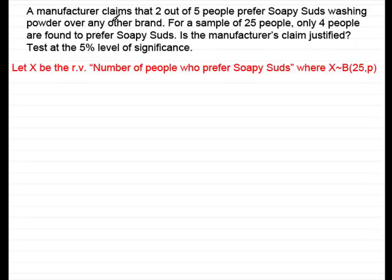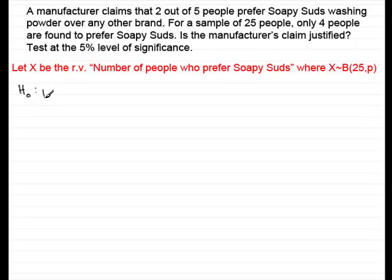Now, if the manufacturer's claim were correct, then we would give this as the null hypothesis. The notation for that is H with a 0 — H0 — and that would be that the proportion P is 2 fifths.